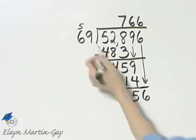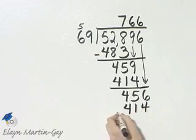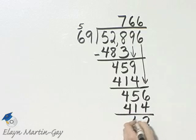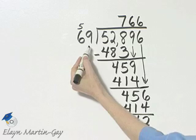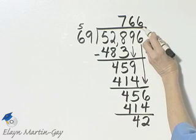And we know 6 times 69 is again 414. Let's subtract. That's 2 and that's 4. That is my remainder. Notice again, this is less than this, so I know that I wouldn't have 7 here. I know 6 is indeed correct in this place.